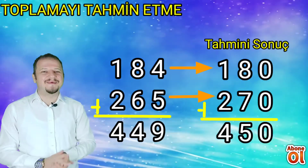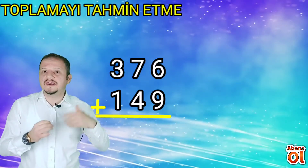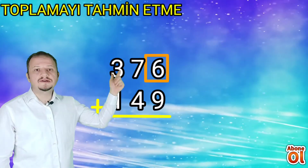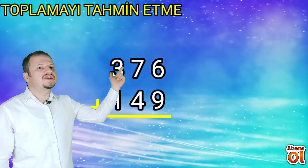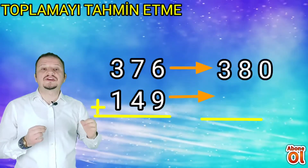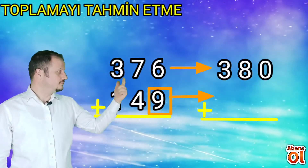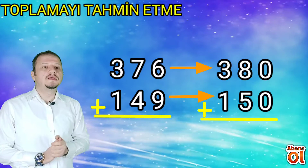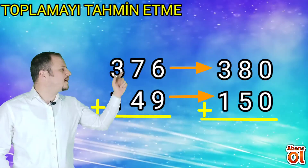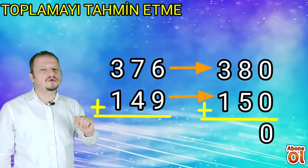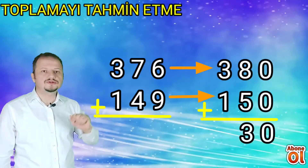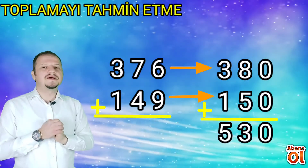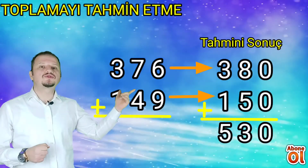Bir örnek daha yapalım. 376 ve 149 sayılarını önce en yakın 10'luğuna yuvarlayarak tahmini sonucu bulalım. 376'da 6 rakamı var, bu bir sonraki 10'luğa yuvarlanır: 380 sayısını buluruz. 149 da aynı şekilde 9 rakamı olduğu için bir sonraki 10'luğa yuvarlanır ve bir sonraki 10'luk 150'dir. Şimdi bunları toplayalım: 380 ve 150'yi topladığımızda 0+0=0, 8 10'luk + 5 10'luk = 13 10'luk; 13'ün 3'ünü yazıyoruz, elde var 1 100'lük. 3 100'lük + 1 100'lük = 4, bir de elde: 5 100'lük yapar. İşlemimizin tahmini sonucu 530'dur.